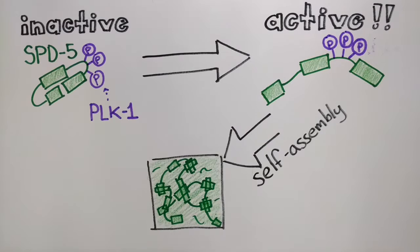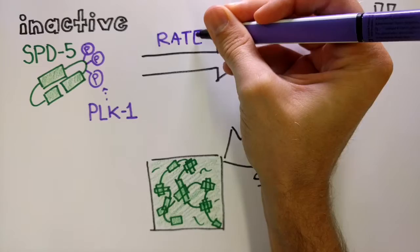Using this model, we successfully predicted centrosome growth rates under mutant conditions, suggesting that PLK-1 phosphorylation regulates centrosome growth by controlling the rate at which SPD-5 switches into its assembly competent form.